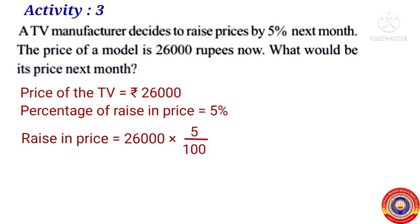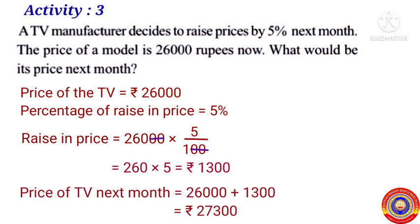5 percentage of 26,000 is equal to 26,000 multiplied by 5 by 100. There are three zeros in the numerator and two zeros in the denominator, so we cancel only the same number of zeros from both. Cancel the two zeros. After cancelling, we got 260 multiplied by 5, that is equal to 1300 rupees. Therefore the price of the TV next month is equal to 26,000 plus 1300, that is equal to 27,300 rupees.